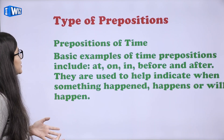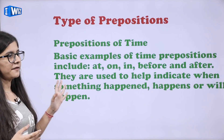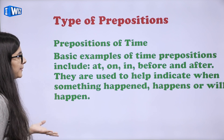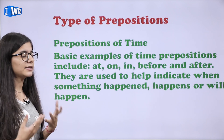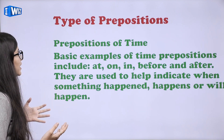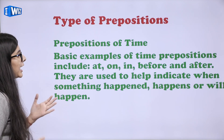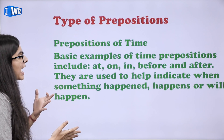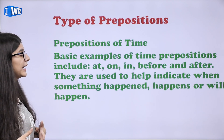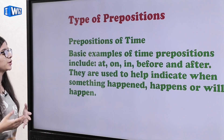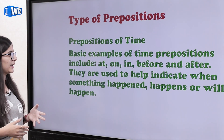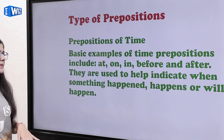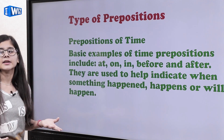So types of prepositions — the first one is prepositions of time. Matlab ki aisi prepositions jo ki time se related kuch hon. Jaisi at, on, in, before and after. They are used to help indicate when something happened, happens or will happen.